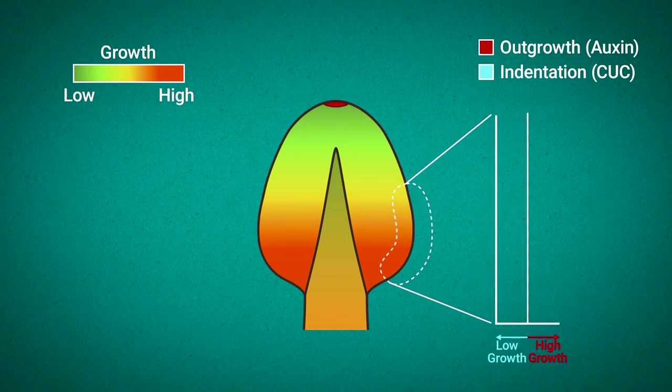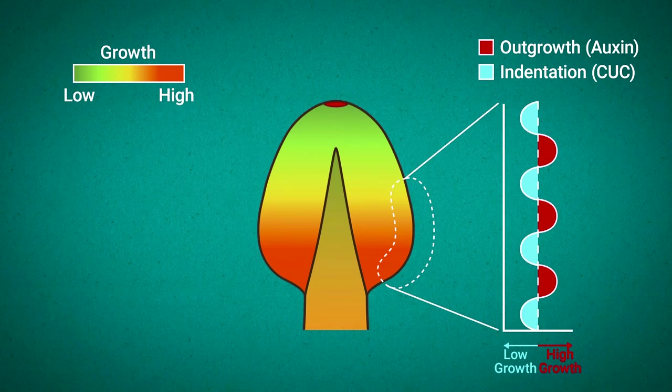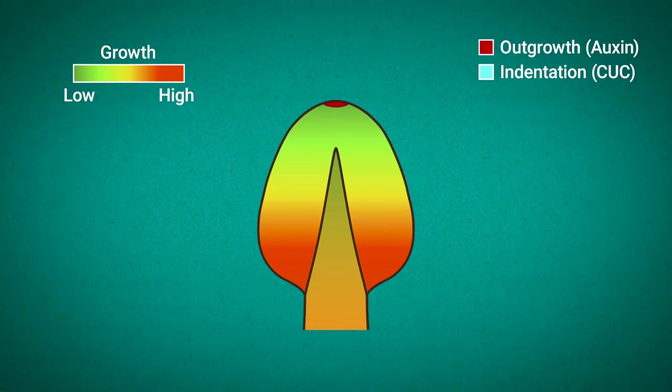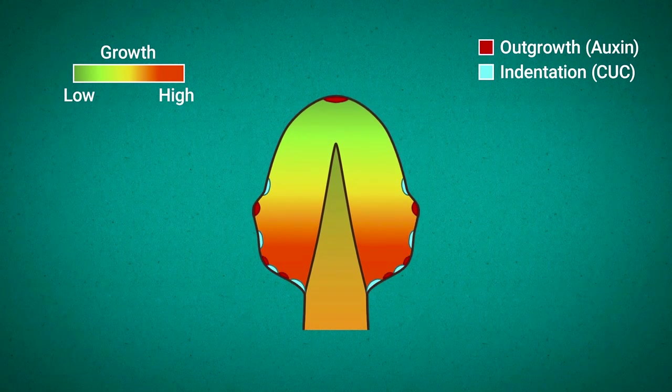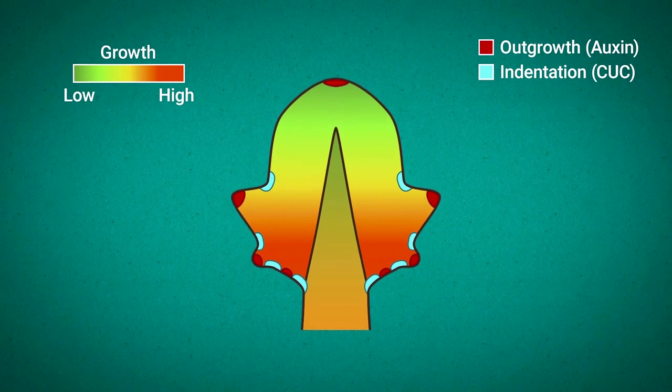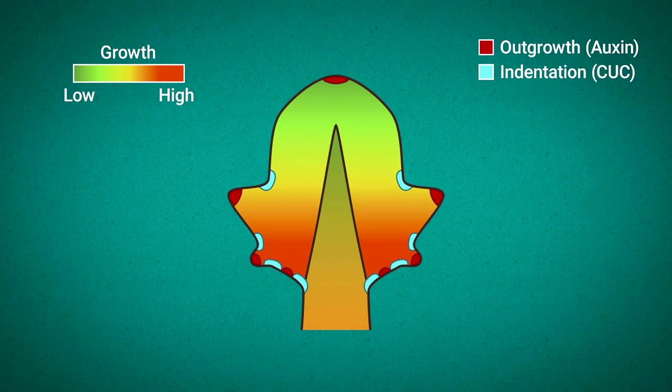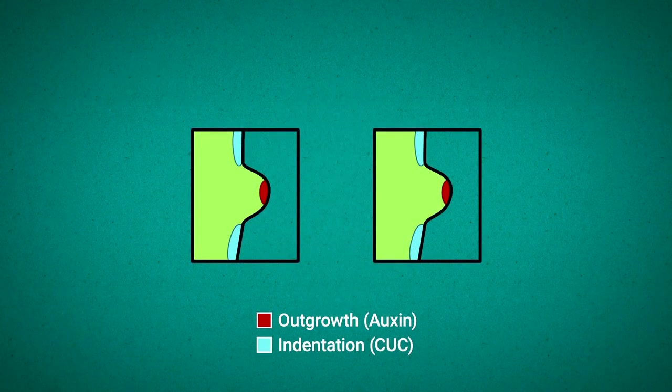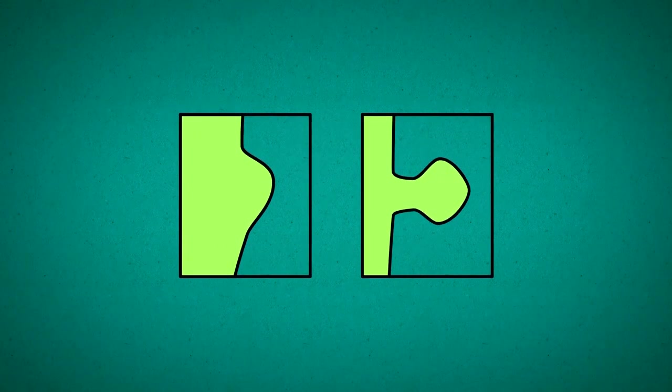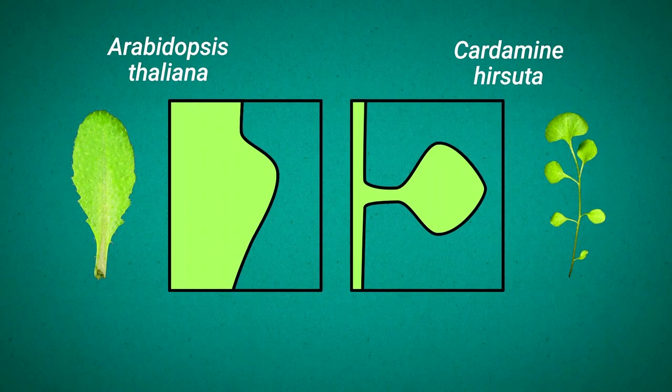Together these approaches show that outgrowths in both species are generated by the same basic patterning mechanism. This mechanism involves the hormone auxin and the transcription factor CUC which create alternating areas of fast and slow growth perpendicular to the main axis of the leaf. How then does the same patterning mechanism make outgrowths into shallow teeth in Arabidopsis but large distinct leaflets in cardamini?